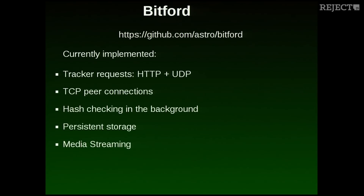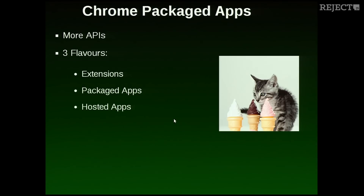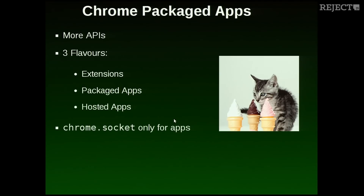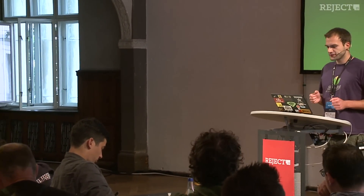The application model I needed, because I want to do TCP connections, are Chrome packaged apps, which give me more APIs. There are three flavors: classical extensions, which are intended to augment your browser with new functionality; and then packaged and hosted apps, which have a different set of APIs and are made to resemble native apps. The difference is that packaged apps are installable locally, while hosted apps are always loaded from the network — so that's not very privacy friendly. The API I needed is the Chrome socket API, which is unfortunately only available to apps, so I couldn't do an extension to implement the torrent.